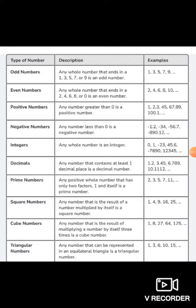Integers. Any whole number is integer. Like 0, 1, minus 23, 45.6, minus 78, 0.90, 0.23, 0.45.